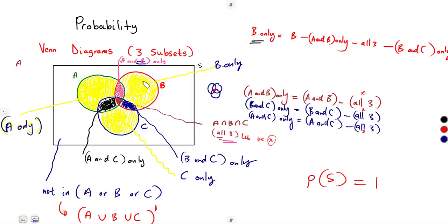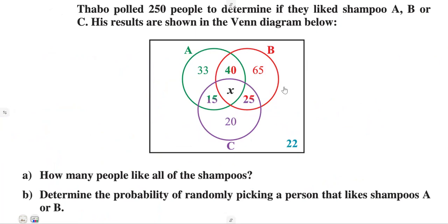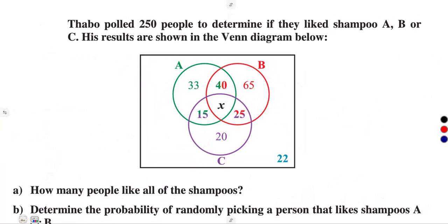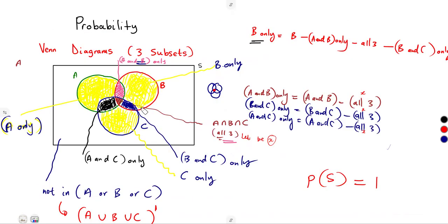From the previous class, we managed to work with the basics of our three subsets. We do not want to waste time, so let us quickly go through some typical questions. We are given that Turbo polled 250 people to determine if they liked shampoo A, B, or C. There are three types of shampoo given, and the results are shown in the Venn diagram below, which has three subsets.